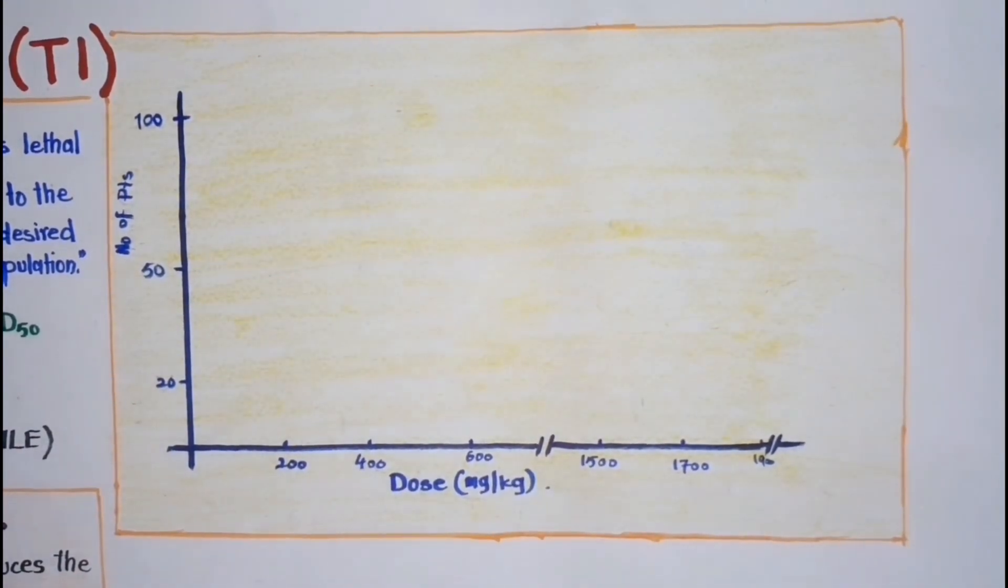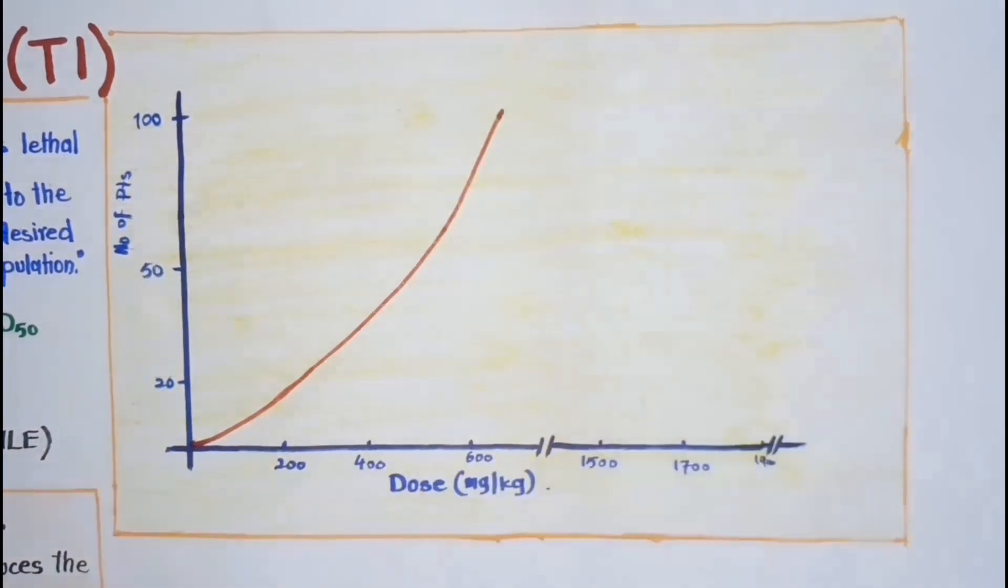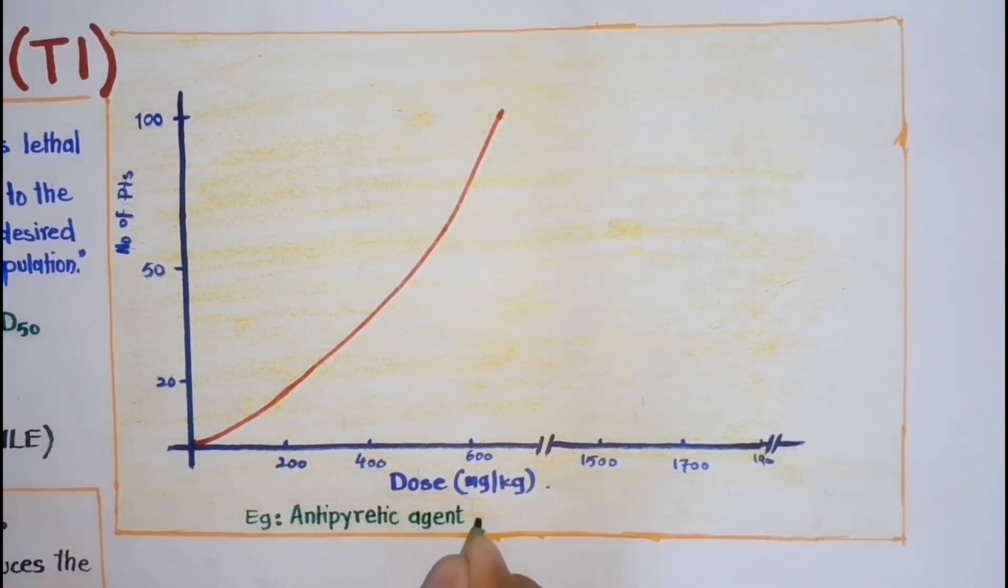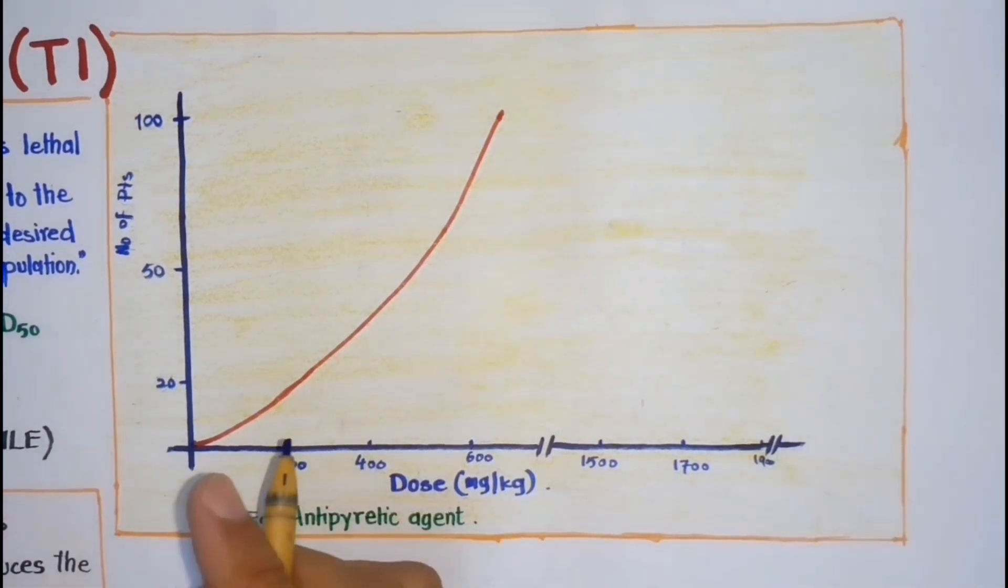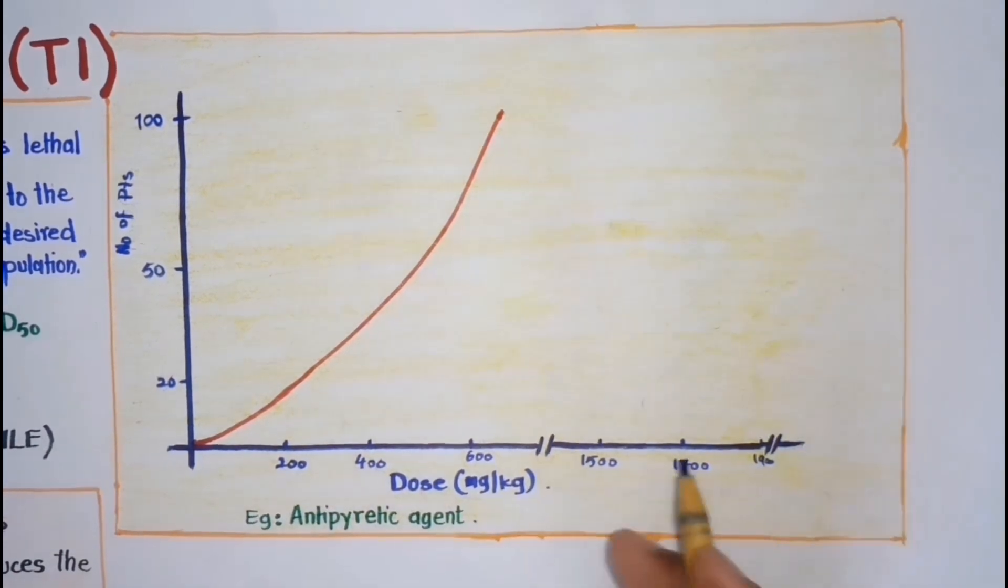For example, this study is done for an antipyretic agent, meaning an agent that relieves fever like acetaminophen or paracetamol. Now, here on this graph, when the drug dose is not given to any subject, then none of the subjects have any antipyretic response.